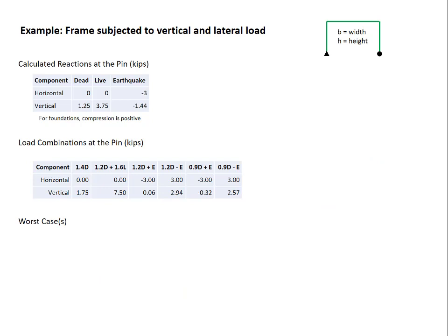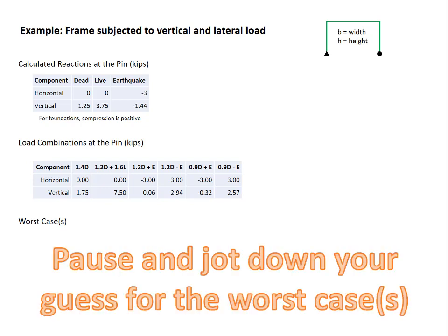It's time to finish the problem by looking at what is the worst case out of all of these. So we have six different load combinations here. Each of those load combinations consists of a horizontal and a vertical component. Some are going to be more severe, some are going to be less severe. Which is the worst case? I'd like you to pause now and jot down your guess for what you think is the worst case or what are the worst cases.